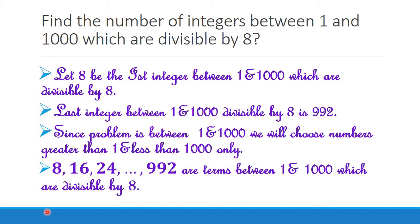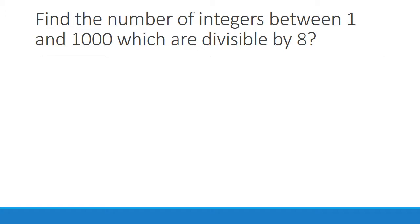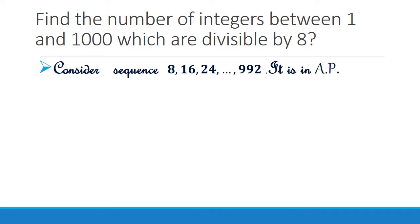We have the terms between 1 and 1000 which are divisible by 8. Now it remains to find how many of them there are. Consider the sequence 8, 16, 24, ... up to 992. We can see that they are in AP. Why? Because the first term 8 plus 8 gives 16, and 16 plus 8 gives 24 — each term is obtained by adding 8 to the previous term.